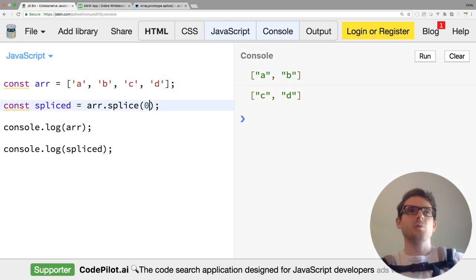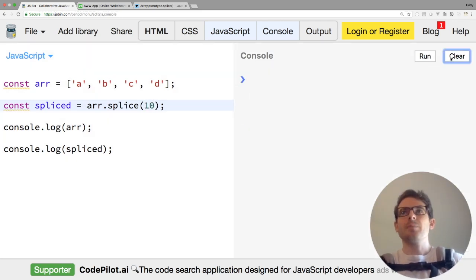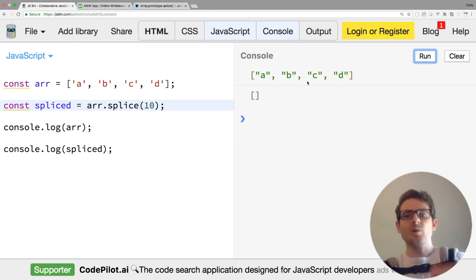And to play around with this a little bit, if you do 0, obviously, that's going to remove everything from the array. So if you see, the original array has nothing in it anymore. And then we got back a new array with all those elements we just removed. And then of course, if you play around and just do something that's out of bounds, like a 10, it's not going to affect your original array at all. And it's going to return you a blank array. So cool stuff to keep in mind.